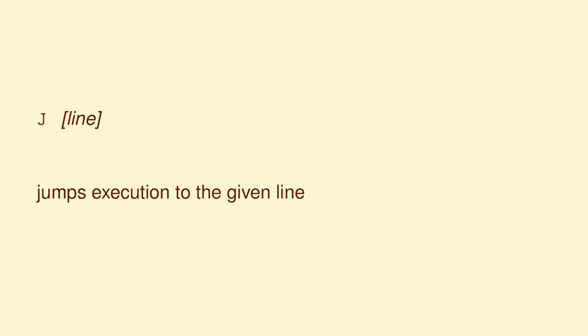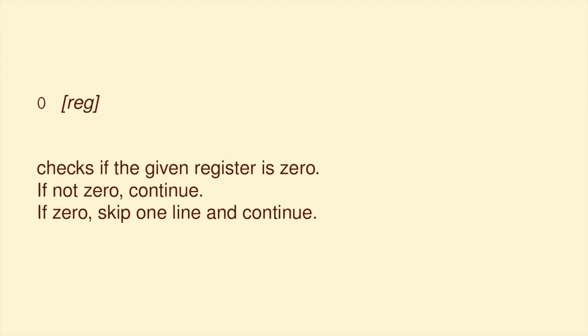J. This jumps the execution to a different line in the code. Zero. This is the most complicated one. It checks if the given register is zero. And if not, then nothing happens. It just goes to the next line. But if it is zero, then we skip one line in the code and go to the next one. This is weird, but it's important. And stop. This one just ends the program.